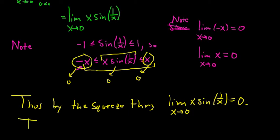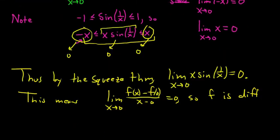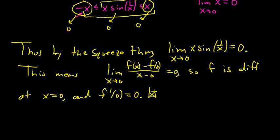So what did we show? This means that the limit as x approaches 0 of f of x minus f of 0, over x minus 0, equals 0. Since the limit exists and equals a number, f is differentiable at x equals 0. Furthermore, f prime of 0 is equal to 0. We've shown that f is differentiable for every single real number, and that completes the proof.